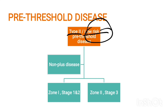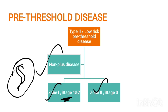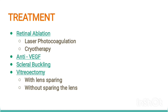Pre-threshold Type 2 is low risk and involves non-plus disease. Zone 1 with stage 1 or 2 (line of demarcation or ridge formation) forms one category. Zone 2 with stage 3 is another category. So: Zone 1 stage 1 or 2, and Zone 2 stage 3 are the low-risk pre-threshold Type 2 categories.